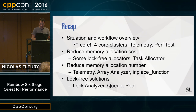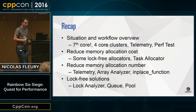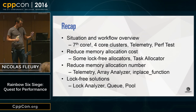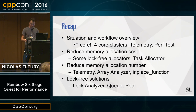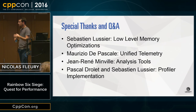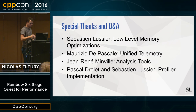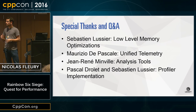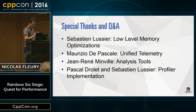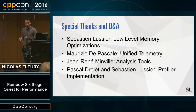Quick recap: gave an overview of the situation — seven cores, four-core clusters, build targets, performance tester. Reduced allocation cost and number — lock-free allocators, thread-local stack allocator, array analyzer, in_place_function, and lock-free solutions. I think we have time for questions. Before taking questions, I want to thank some people — I gave an internal talk at Ubisoft with Sébastien Lussier and Mauricio de Pascale. Sébastien worked on the low-level memory optimization with Pascal Drellet on the profiler implementation, and Mauricio de Pascale was the architect behind the unified telemetry system. I also want to thank our colleague who made pretty much all the analysis tools shown.